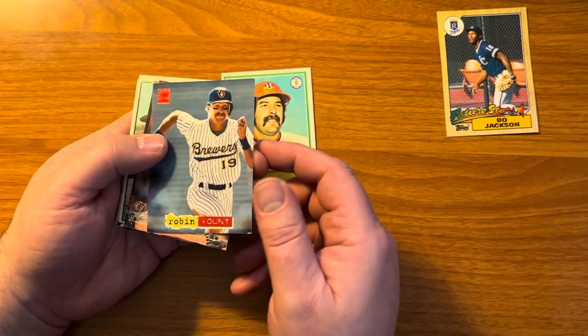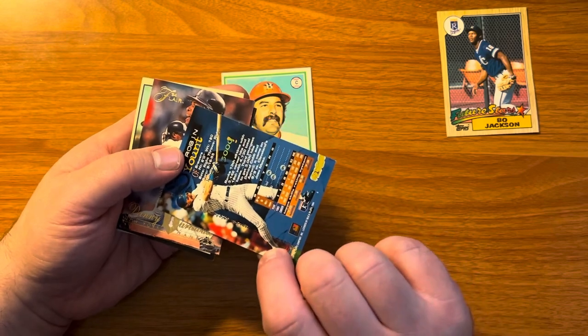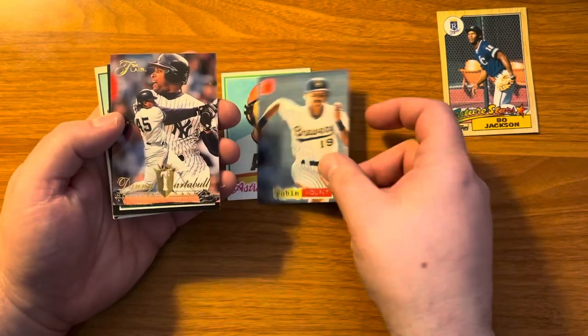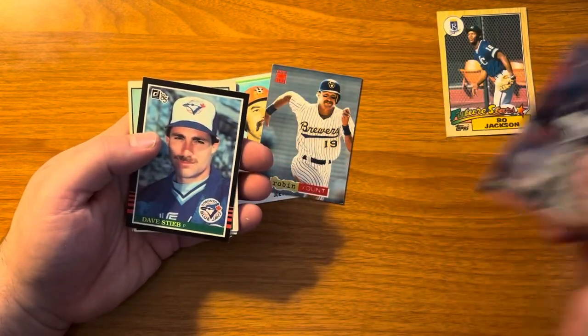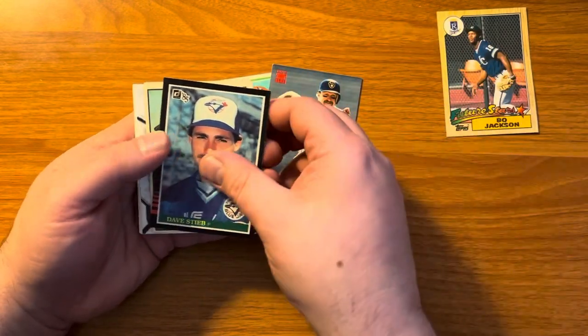Robin Yount. This is a Topps Stadium Club. What year have we got here? 94, it looks like. This is Danny Tartabull. Dave Stieb. 85 Donruss.